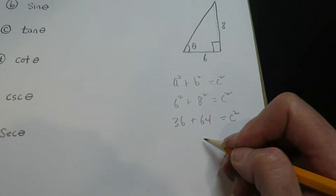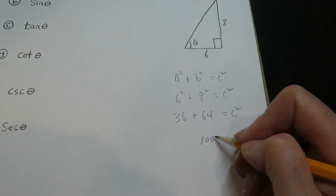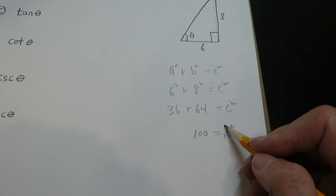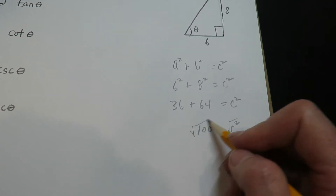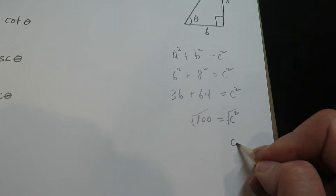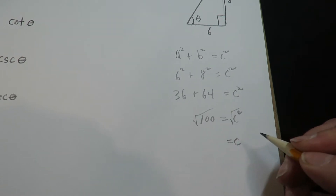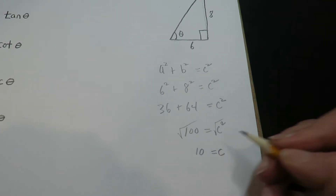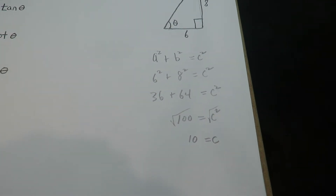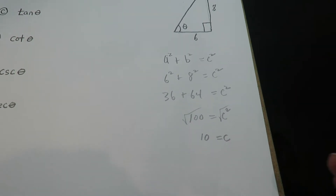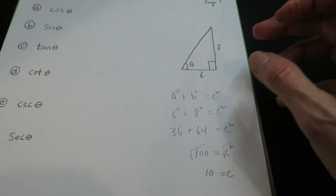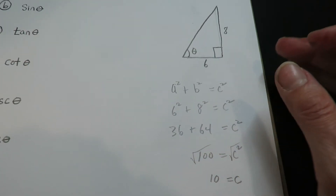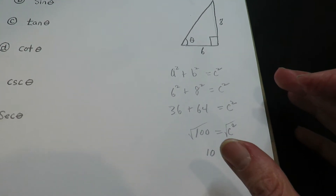Now this is c squared, which means you have to take the square root. Usually when we take a square root, we put a plus or a minus, but because this application is referring to a magnitude, you want to just take the positive.